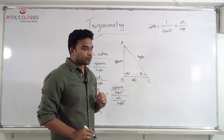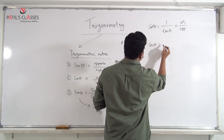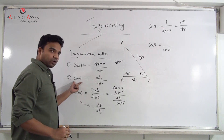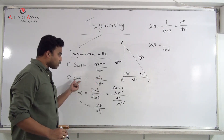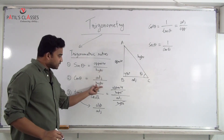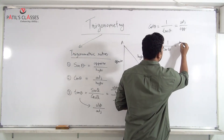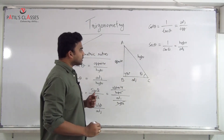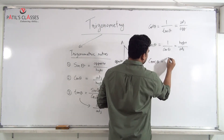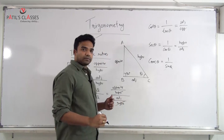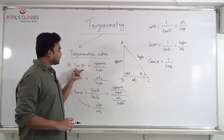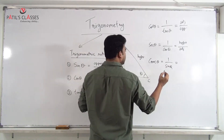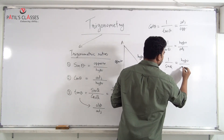Next is sec θ: sec θ = 1/cos θ. Since cos θ = adjacent/hypotenuse, the reciprocal gives sec θ = hypotenuse upon adjacent. And the last is cosec θ: cosec θ = 1/sin θ. Since sin θ = opposite/hypotenuse, cosec θ = hypotenuse upon opposite.